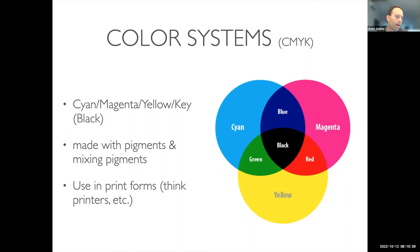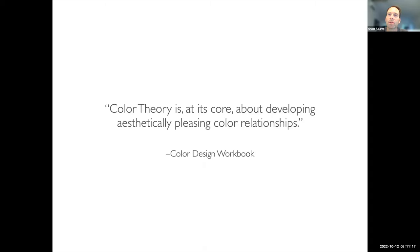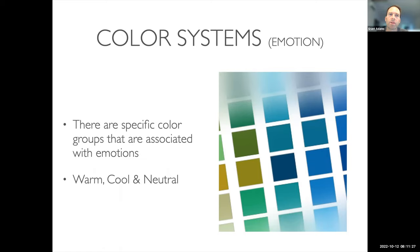Color theory is about the idea that there's fundamentally a meaning behind colors — a sensory experience we associate with particular colors. If you as a designer are deliberate in your choice of color, you can use the underlying emotion or effect of color to help foster a particular response to your work. At its core, color theory is about developing aesthetically pleasing color relationships. Sometimes we think about emotion when it comes to color — specific groups of color are associated with emotions. We generally have warm colors, cool colors, and neutral colors.